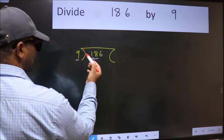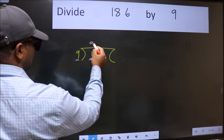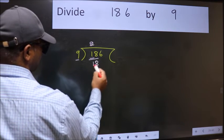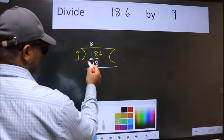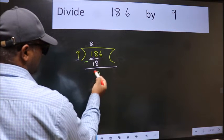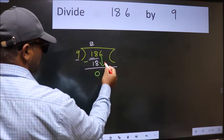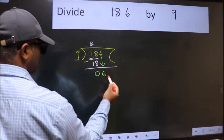When do we get 18 in 9 table? 9 twos 18. Now we should subtract. We get 0. After this, bring down the beside number. So 6 down.